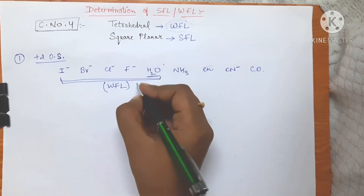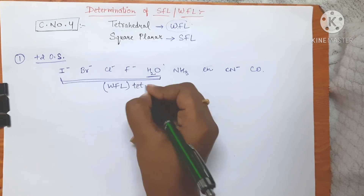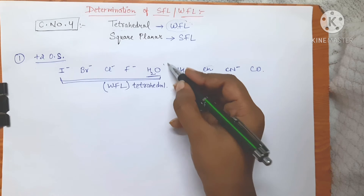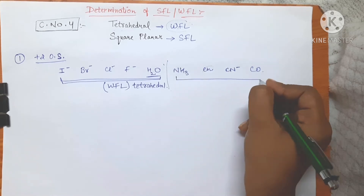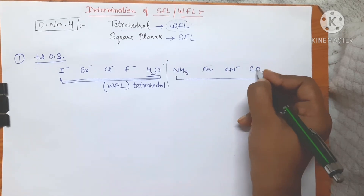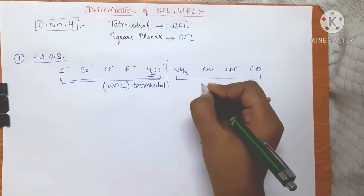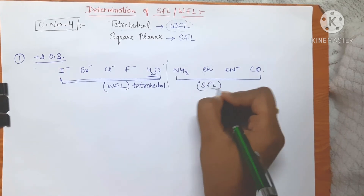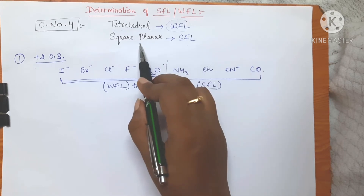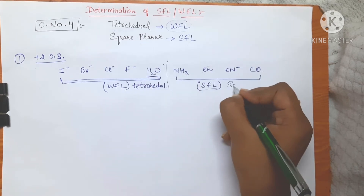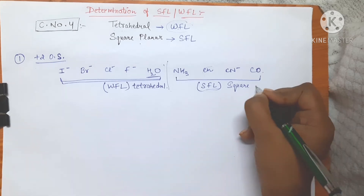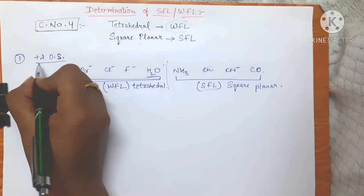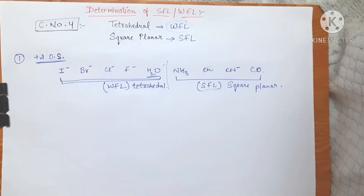After the oxygen donors, all ligands up to the CO ligand are going to behave as strong field ligands. If the ligands are strong field ligands, that means the complex is going to have square planar geometry. This is the case for the plus two oxidation state.